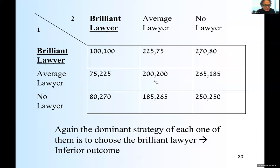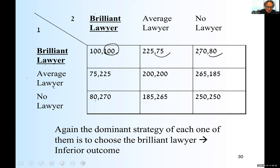For player two as well: if player one goes brilliant, she compares brilliant (100) vs. average (75) vs. no lawyer (80) — brilliant is best. If player one goes average: 225 versus 285 — brilliant wins. If player one takes no lawyer: 270 vs. 265 vs. 250 — brilliant is again the best. So in all three cases, the dominant strategy for player two is also the brilliant lawyer.